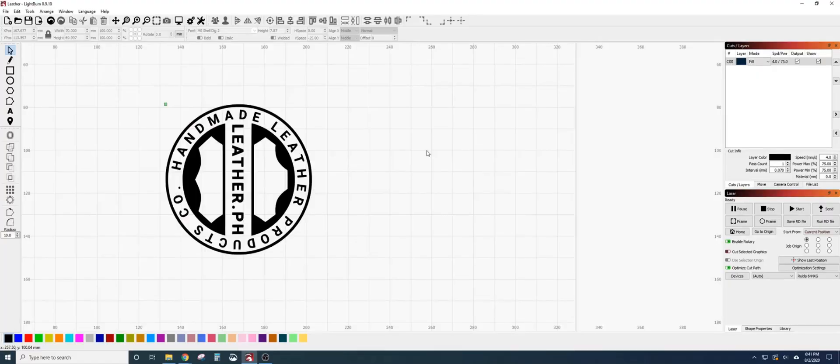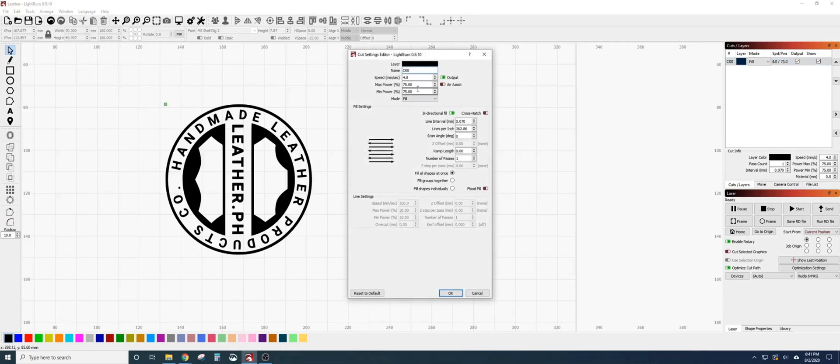Once you have the rotary set up in your machine, you have to make sure that all of the settings are correct in Lightburn. For my testing, I've found that the maximum power I can safely run my K40 at is at 75% power. I've also found that for engraving on glass, 75mm per second at this maximum power of 75% comes out with good results.